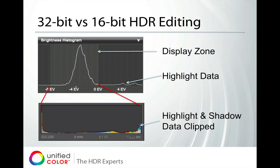Working in 32-bits means we are able to see additional data that's outside the display range. We have a 32-bit histogram — this light gray box indicates the display zone, which is what you're able to see on the screen. Looking at the histogram, I can see peaks of data out here from the windows, sky, and clouds outside the room that were outside the display range. Down below is a typical 16-bit histogram, which maps to our display zone, and at the end you clip the highlights — so all of that information actually in the 32-bit file is lost when you're in 16-bits.